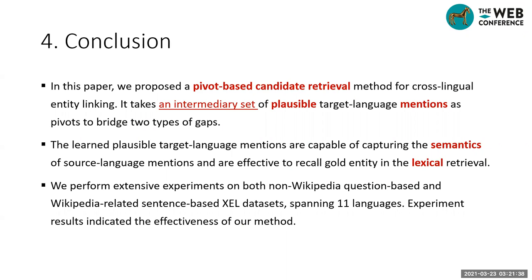To conclude, in this paper we proposed a keyword-based candidate retrieval method for cross-lingual entity linking. It jointly leverages semantic retrieval and lexical retrieval, taking an intermediary set of plausible English mentions as keywords to bridge two types of gaps. The learned plausible mentions capture the semantics of mentions and are effective at recalling correct entities in lexical retrieval. We performed extensive experiments on two datasets spanning 11 languages, and results show the effectiveness of our method. Thank you for your attention.